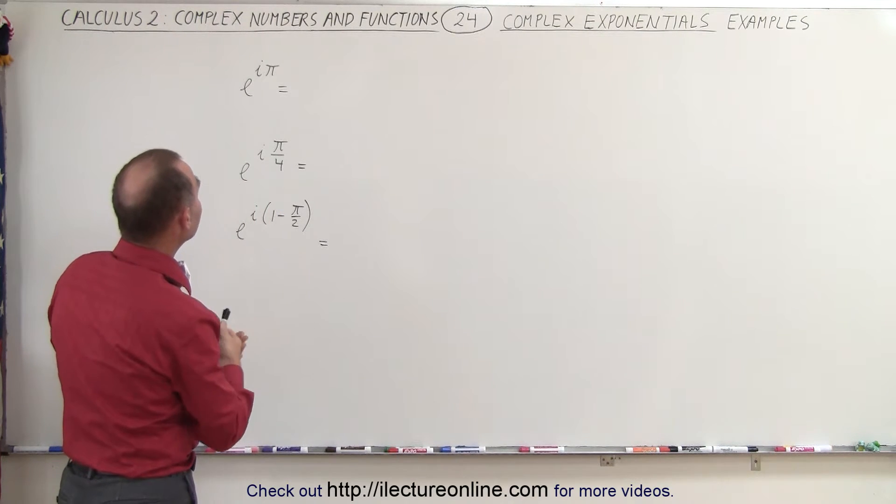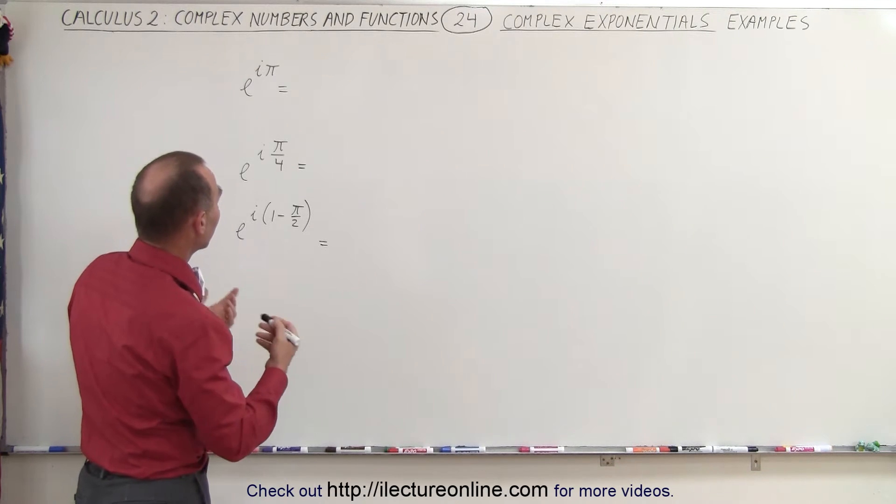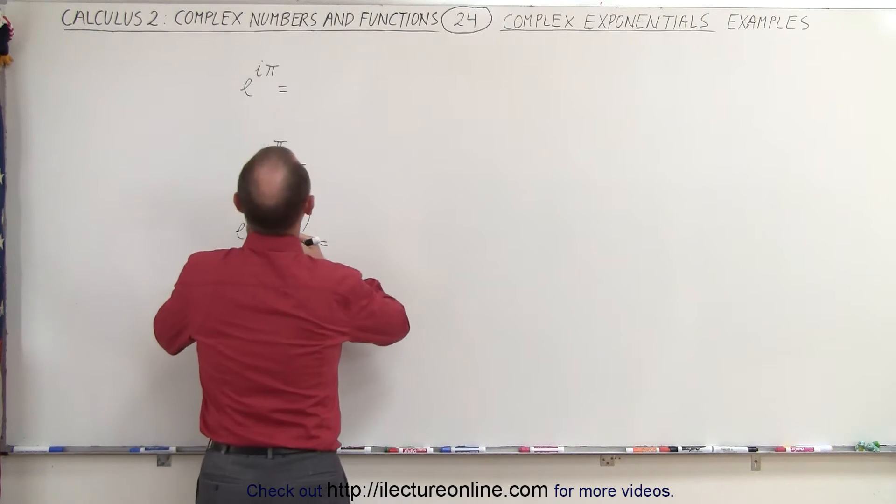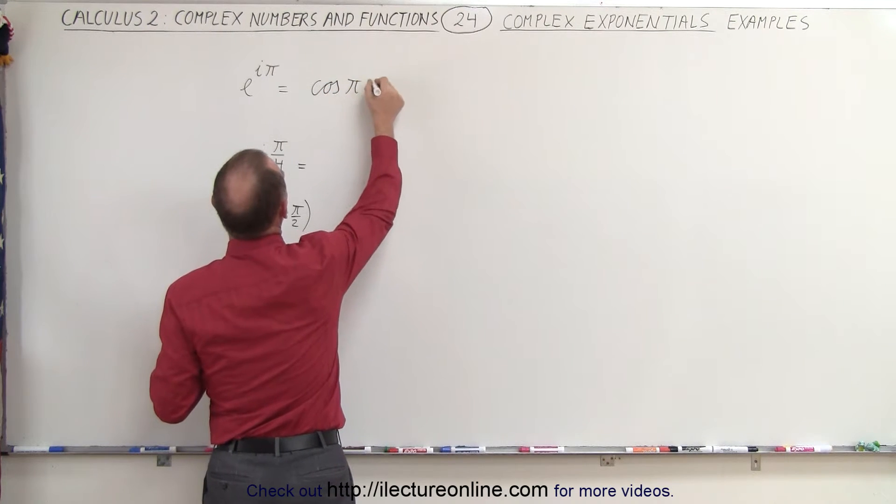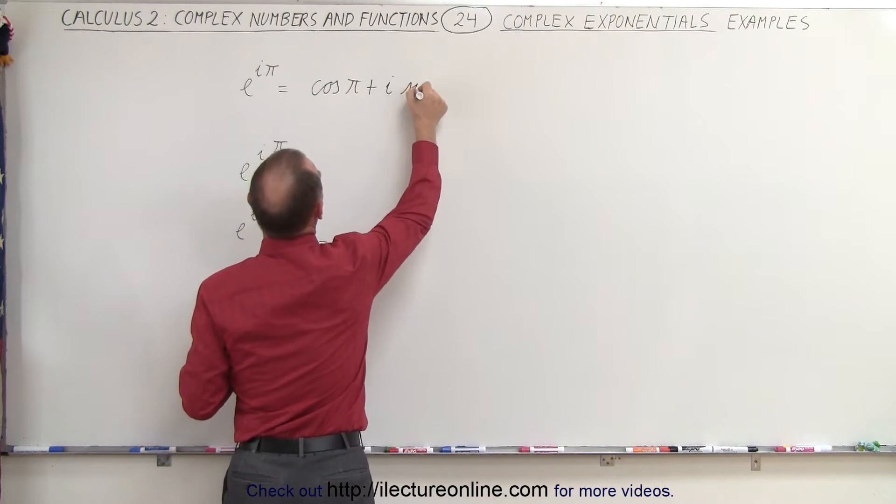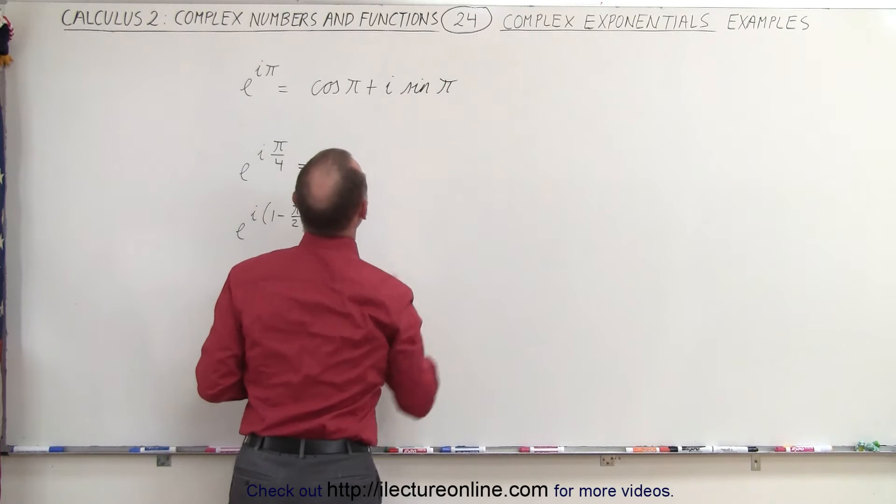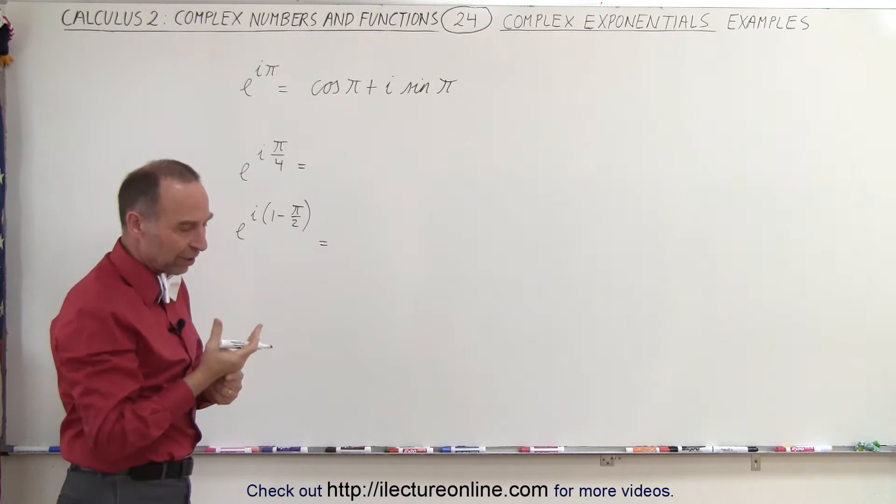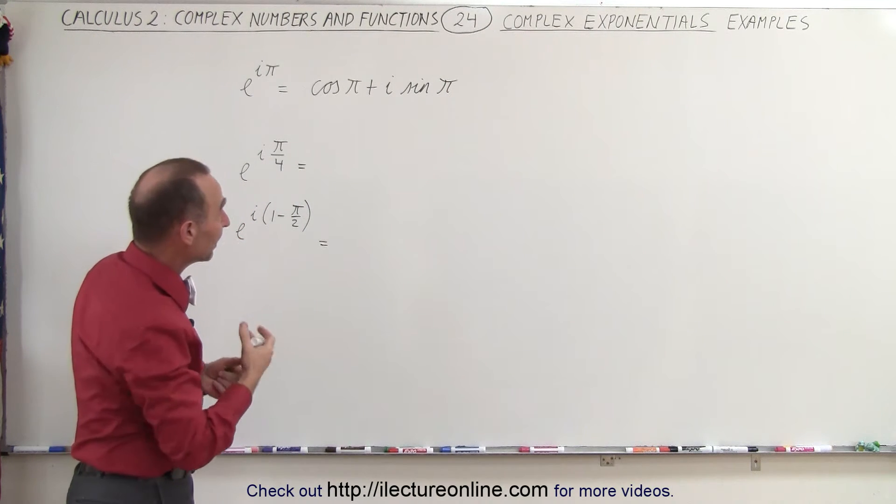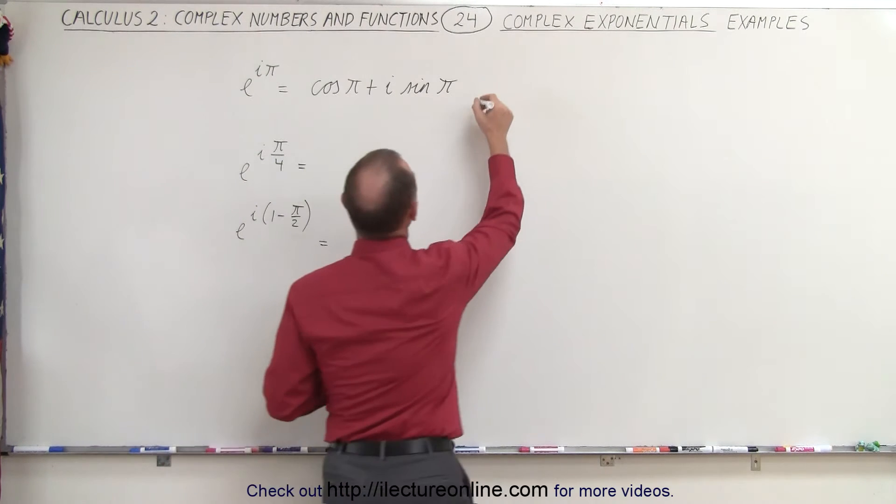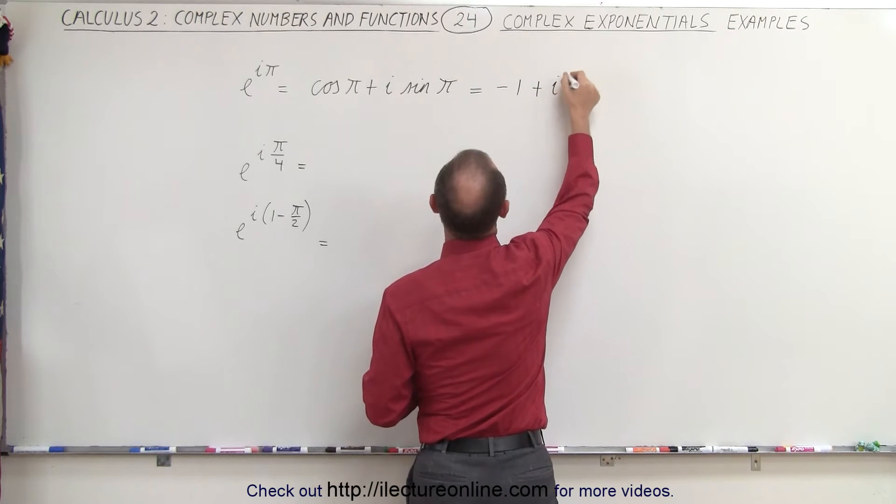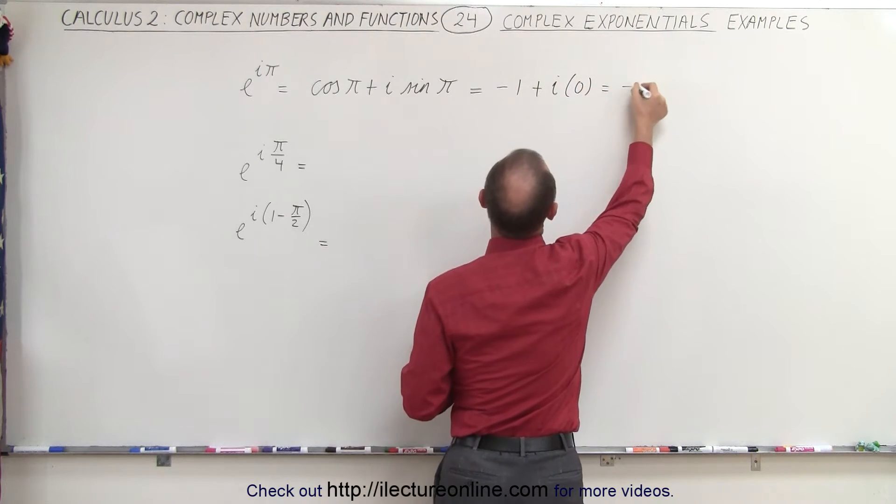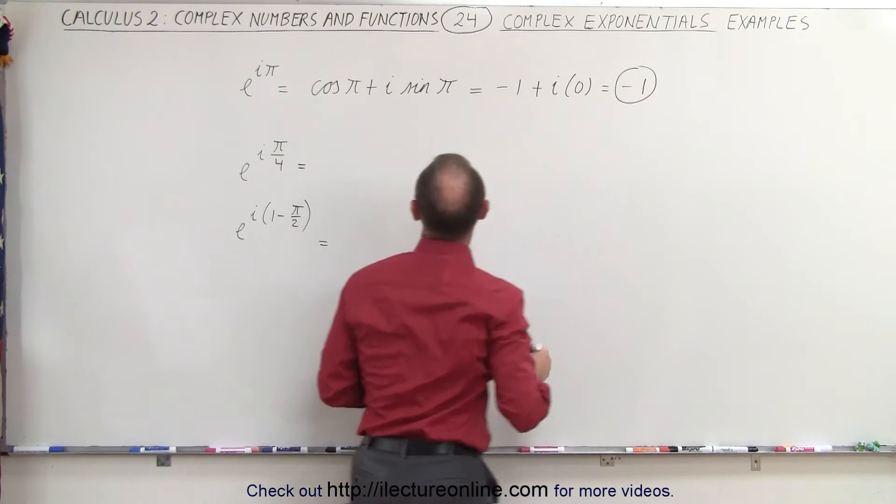How can we rewrite e to the i pi? Well, we realize using Euler equation that this can be written as the cosine of pi plus i times the sine of pi. And then we realize that the cosine of pi is negative one and the sine of pi is zero. So this can then be reduced to the cosine of pi, which is negative one, plus i times zero, which means this is simply equal to negative one.